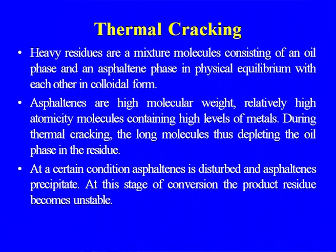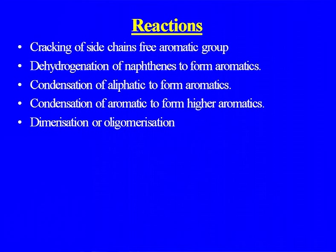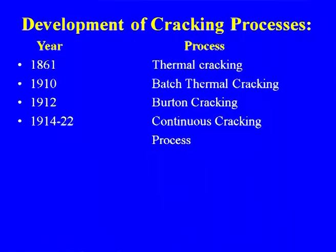Thermal cracking reactions include: cracking of side chains from aromatic groups, dehydrogenation of naphthenes to form aromatics, condensation of aliphatics to form aromatics, condensation of aromatics to form higher aromatics, and dimerization or polymerization. One problem in thermal cracking is unavoidable coke formation, which also occurs in catalytic cracking at high temperatures. Historically, the first petroleum coke was made in northwestern Pennsylvania in the 1860s. A real breakthrough was the development of the first cracker by William Burton, first used in 1913. By 1922, a continuous cracking process had been developed.